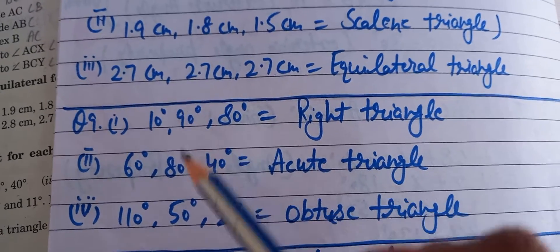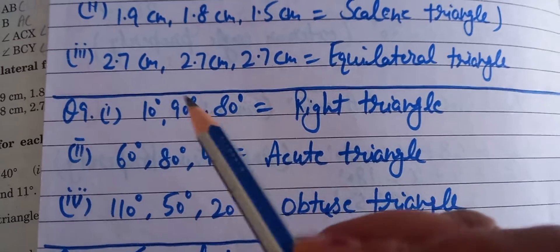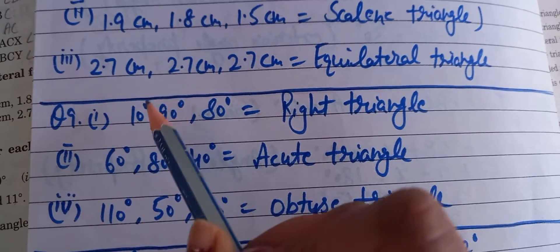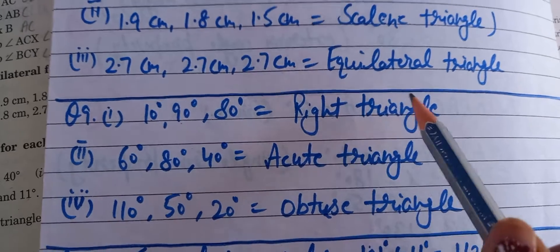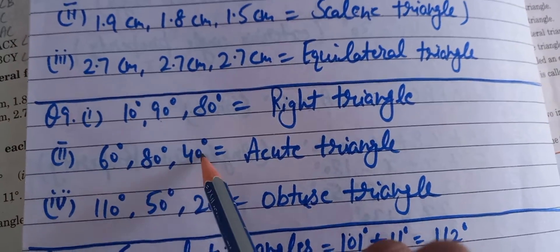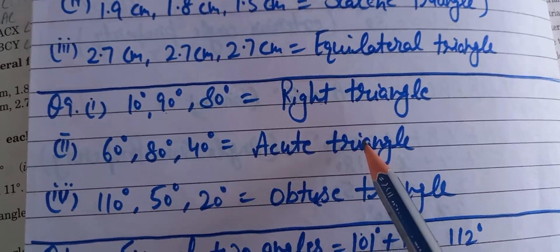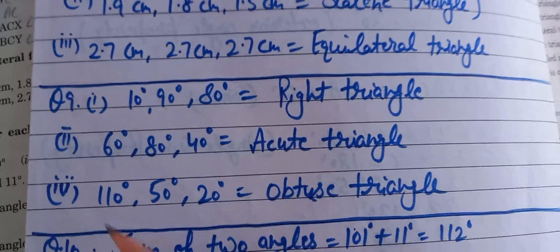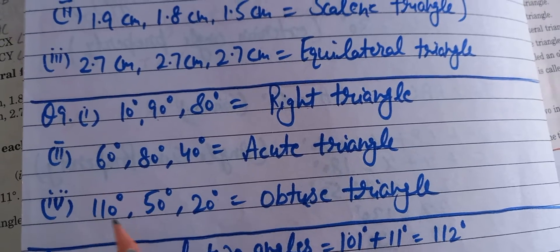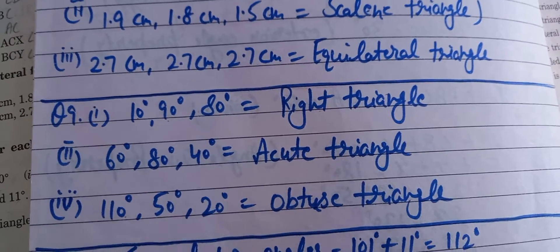In question 9, angles are given and you have to identify the type of triangle. If one of the three angles is 90 degrees, it is a right triangle. If all three angles are less than 90 degrees, it is an acute triangle. If one angle is greater than 90 degrees, it is an obtuse triangle.